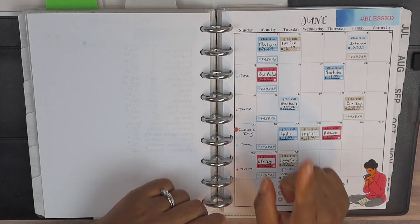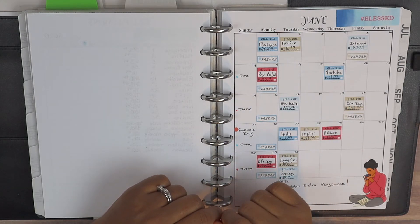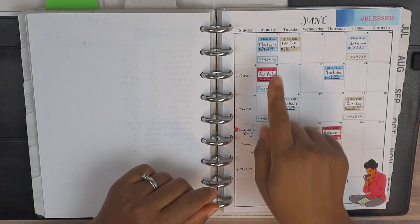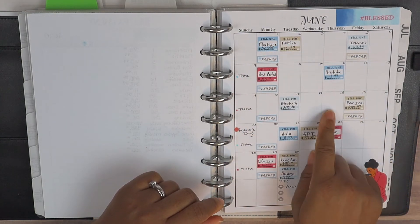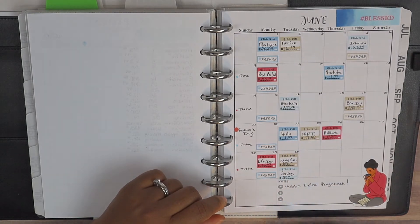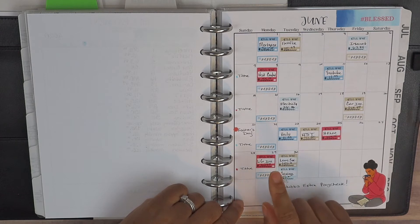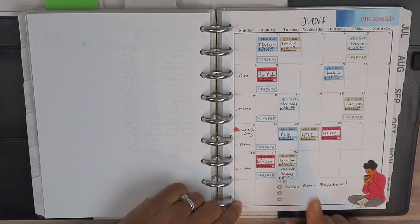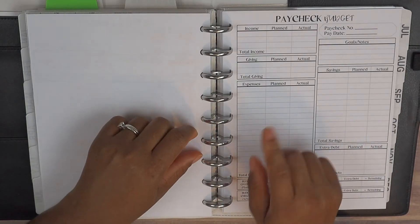And so we are going to go ahead and get right into completing our paycheck budget number one for June. Now our paycheck budget number one is going to run us from June 1st all the way through the 18th, and this is an extra paycheck for hubs, so he gets paid on Mondays, so we've got five Mondays in the month of June.